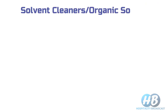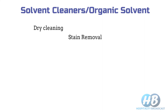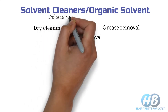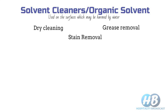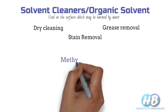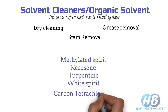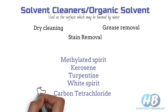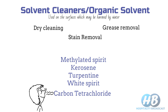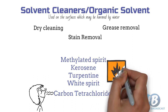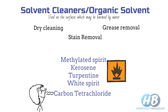Next, solvent cleaners or organic solvents. Organic solvents are widely used for dry cleaning and stain removal in the hotel industry. They are also great for grease removal and evaporate in the air quickly, so they can be used for cleaning windows, mirrors, picture frames, etc. These are also used on surfaces which may be harmed by water. Some examples of organic solvents are methylated spirit, kerosene, turpentine, white spirit, carbon tetrachloride, etc. Carbon tetrachloride is harmful if inhaled, and the rest are highly inflammable, so never use these in an enclosed environment.